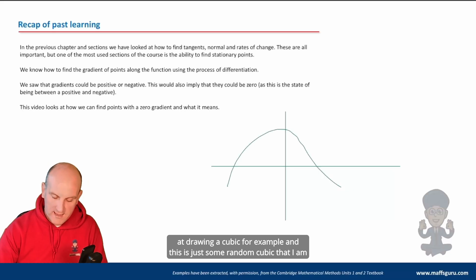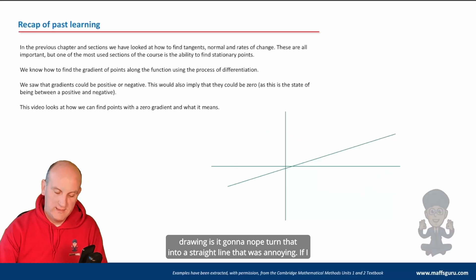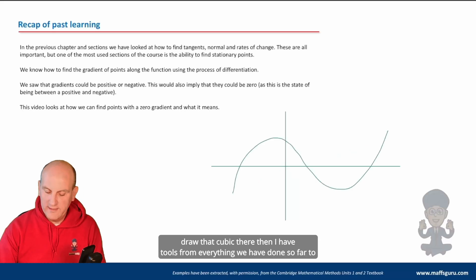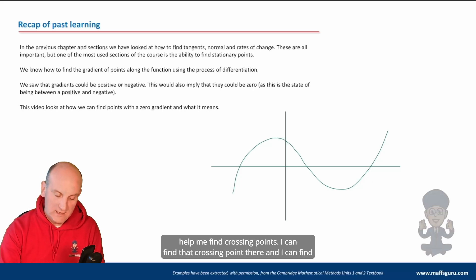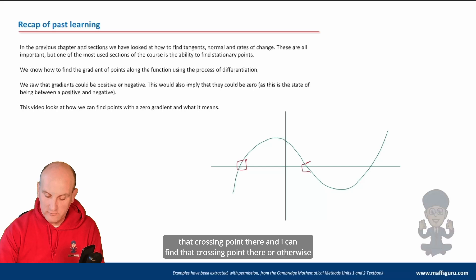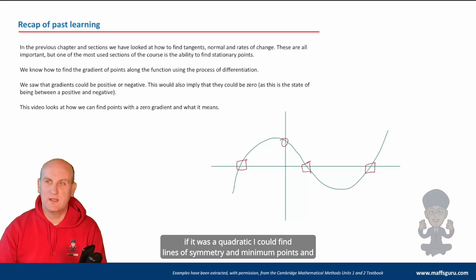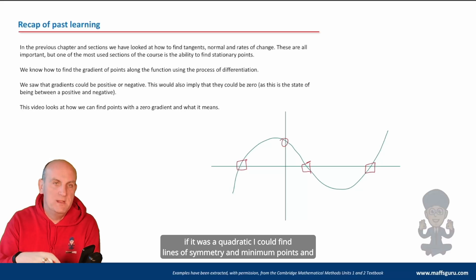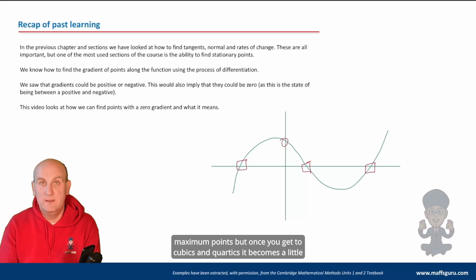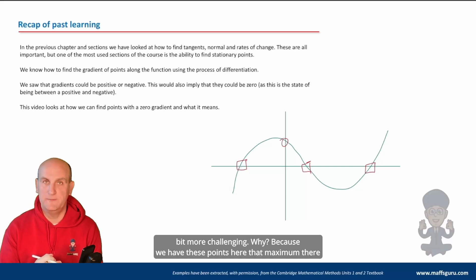If I draw a cubic, I have tools from everything we've done so far to help me find crossing points — that crossing point there, that one there, and that one there, otherwise known as roots. I can find my y-axis intercept. And if it was a quadratic I could find lines of symmetry and minimum and maximum points. But once you get to cubics and quartics it becomes a little bit more challenging.